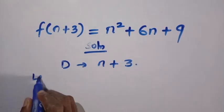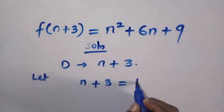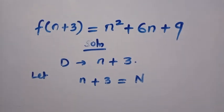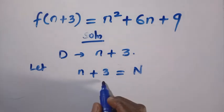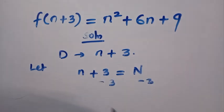Suppose I let n+3 equals capital letter N. So these are two different letters. Then let's make n the subject. We are going to subtract 3 from both sides. So by subtracting 3 from both sides, we have this 3 cancelled 3, and we make n the subject as n = N - 3.